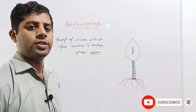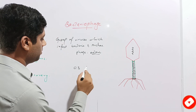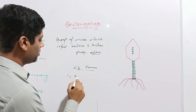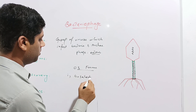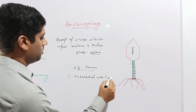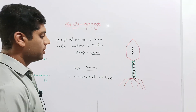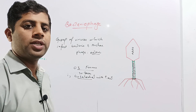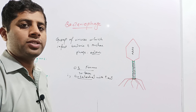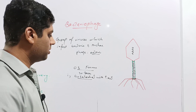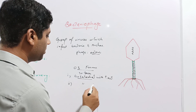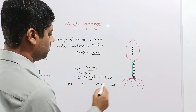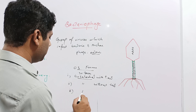Now the forms of bacteriophage. The bacteriophage has three forms. First form is icosahedral with tail — icosahedral means 20 faces, so the capsid of this phage has 20 faces along with a tail. The second form is icosahedral without tail. And the third form is filamentous phage, which is a filament-like or fibrous phage.